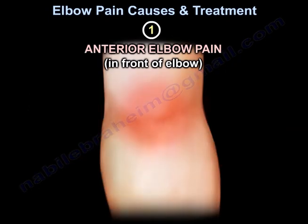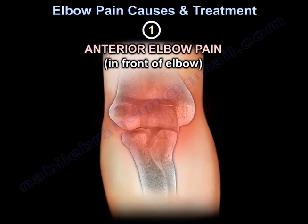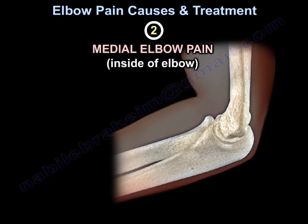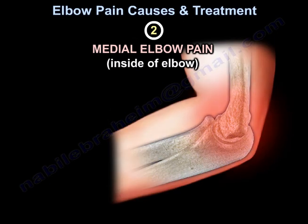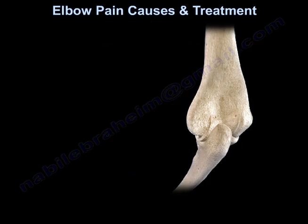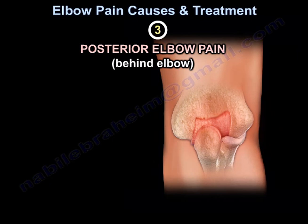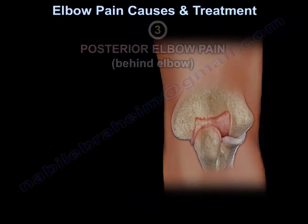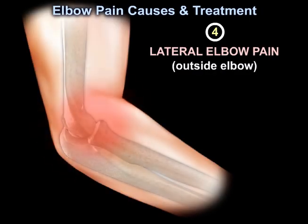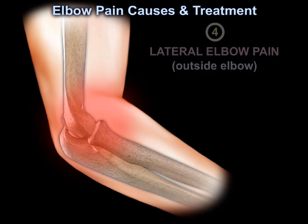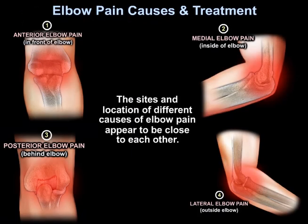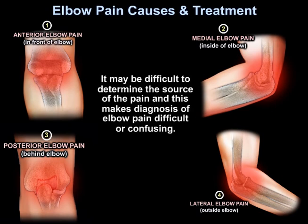One group is anterior elbow pain, or in front of the elbow. Another group is medial elbow pain, which is the inside of the elbow. Another group is posterior elbow pain, or behind the elbow. Another group is lateral elbow pain, or the outside of the elbow. The sites and locations from different causes of elbow pain appear to be close to each other, which may make diagnosis difficult or confusing.